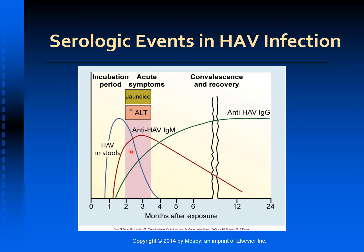Detection of hepatitis A IgM indicates acute hepatitis. Although not commonly assessed clinically, hepatitis A IgG indicates past infection. IgG antibody provides lifelong immunity — so if you see IgG in a hepatitis A patient, that is a good sign. Hepatitis A vaccination and thorough hand washing are the best methods to prevent outbreaks.